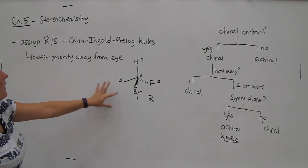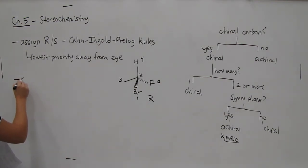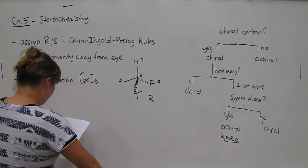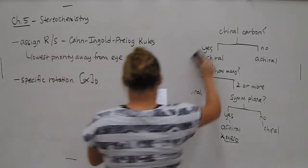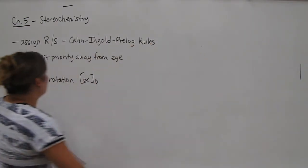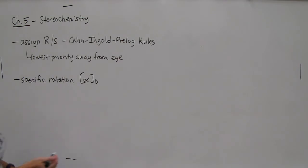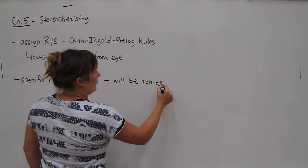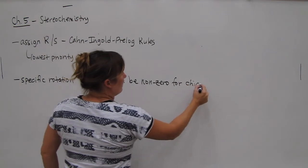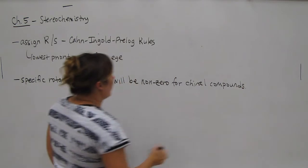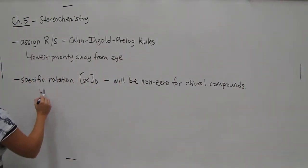After we talked about R and S, this led into a discussion of specific rotation. And this was known as alpha D. Specific rotation will be non-zero for chiral compounds. So we can ask ourselves, when is alpha D zero?